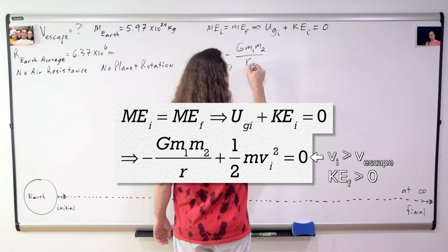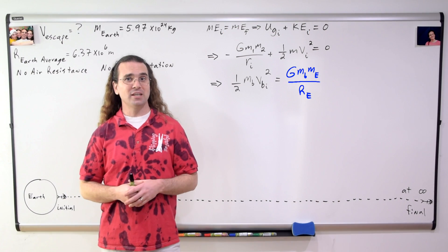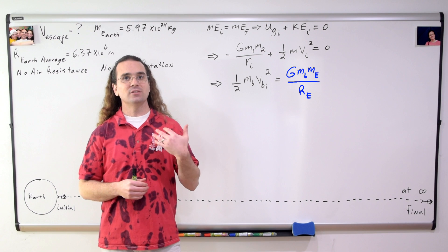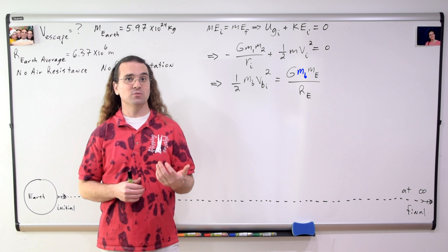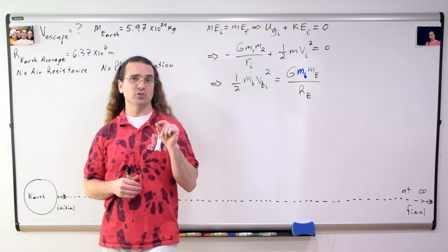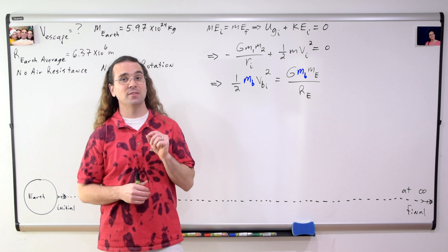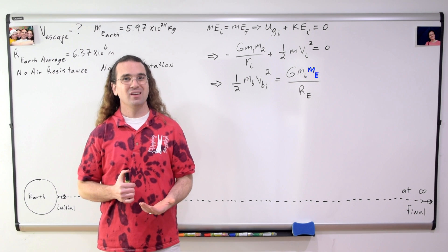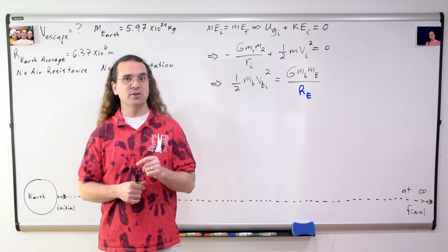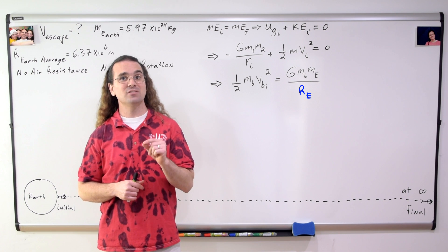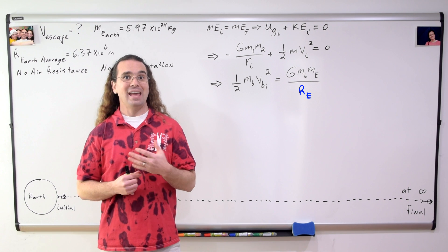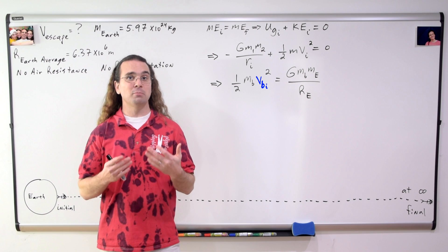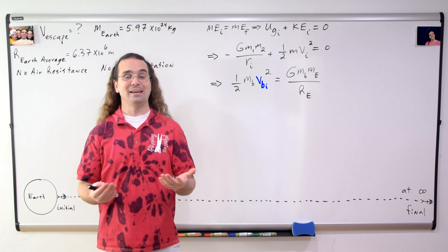Mr. P, we can move gravitational potential energy to the right side and substitute in the mass of Bo for mass 1 in the universal gravitational potential energy equation and the mass in the kinetic energy equation. Mass 2 is the mass of the Earth. The initial distance between the centers of mass of Bo and the Earth is the radius of the Earth. And the initial velocity is Bo's initial velocity.